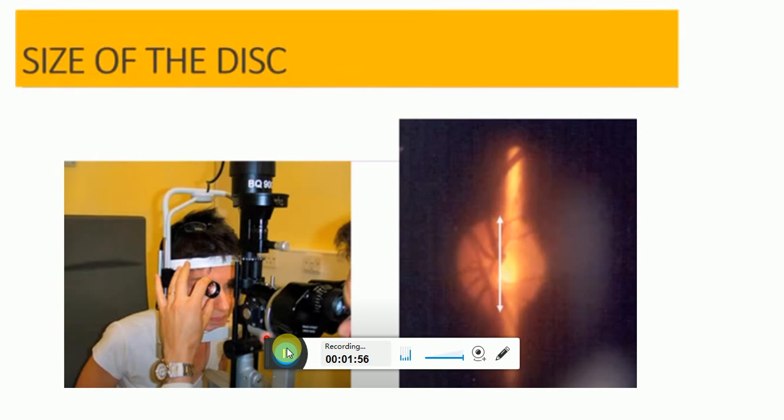In the ocular hypertension treatment study, 84 percent of hemorrhages on the optic nerve head were detected on ONH photographs but were missed on clinical examination.